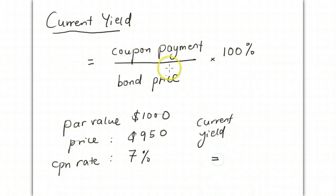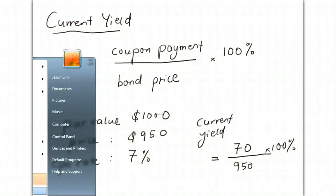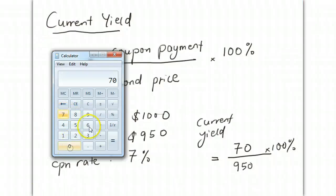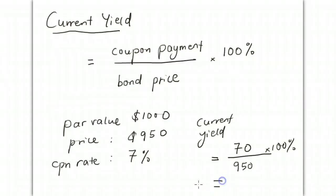The coupon payment is $70 (7% of $1,000) divided by $950, times 100%. Calculating this: $70 ÷ $950 × 100 = 7.37%.